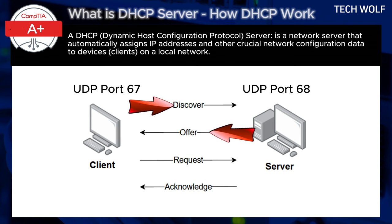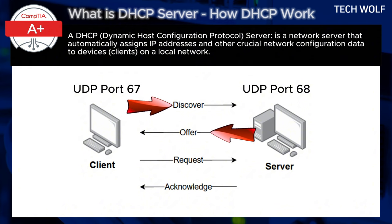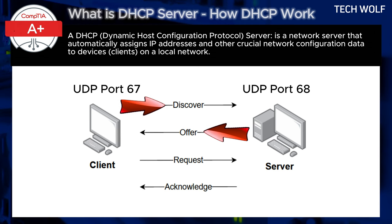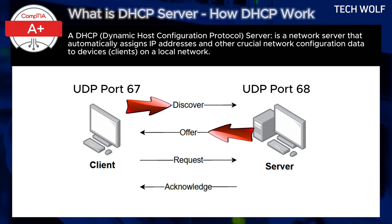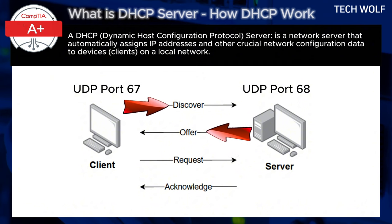The Discover message is sent as a broadcast because the client doesn't yet know the IP address of the DHCP server or its own IP address. The next step is DHCP Offer, server to client on UDP port 68. Upon receiving a Discover packet, the DHCP server responds with a DHCP Offer packet including an available IP address, subnet mask, default gateway, DNS servers, and the lease time. The server sends the offer to UDP port 68, which is the port where the client listens for DHCP responses.